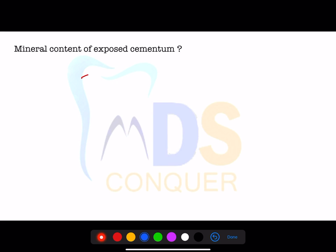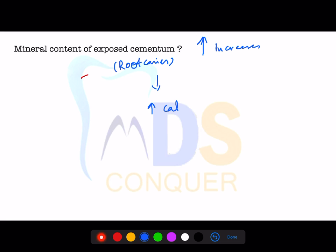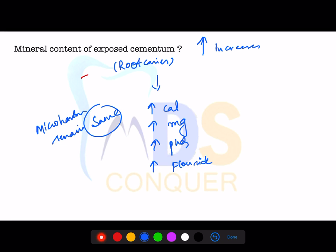Regarding the mineral content of exposed cementum: when cementum is exposed due to gingival recession, its mineral content increases. Calcium, magnesium, phosphorus, and fluoride content all increase in exposed cementum or in root caries. However, the micro-hardness of the cementum remains unchanged — it stays the same even as those mineral contents increase.